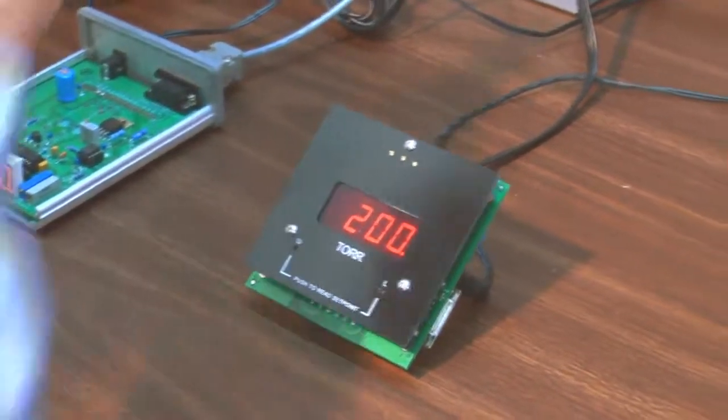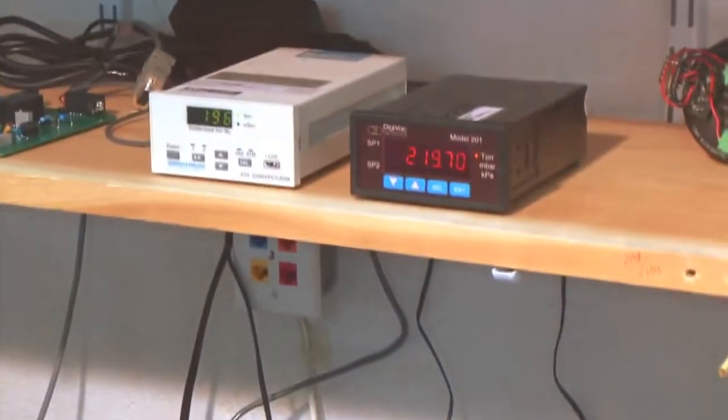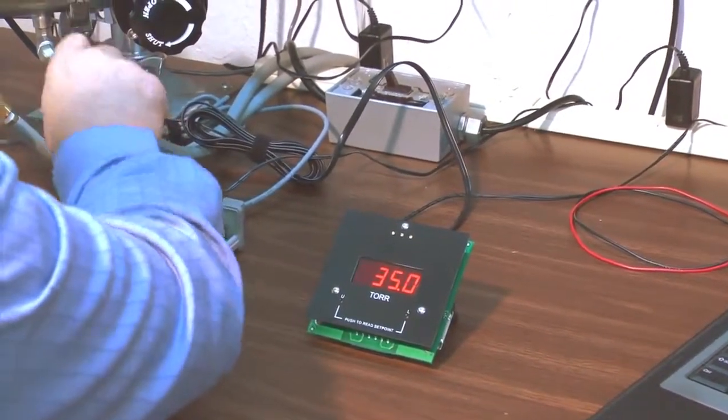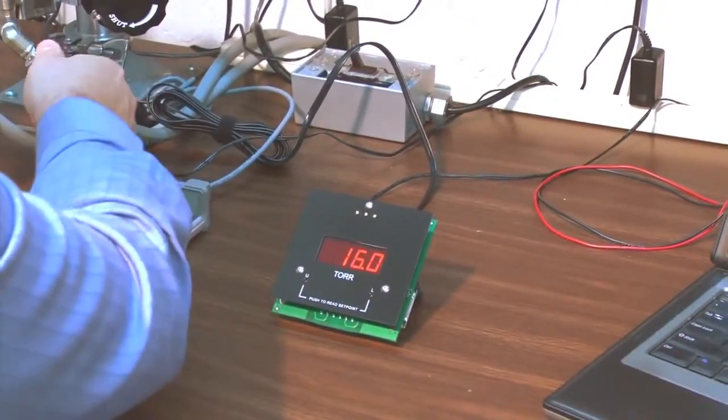219 torr on our barotron, 200 torr on our 801W. 19.5 torr on our barotron, 34 torr on the 801W. Looks like we'll make another correction down on the bottom end. To do that, we'll pump our system all the way back down to hard vacuum.